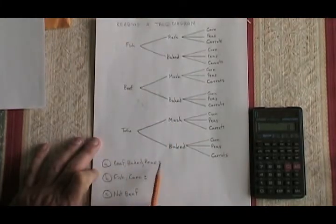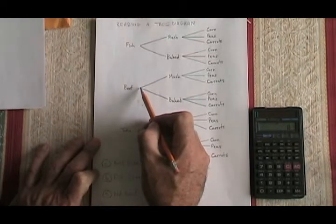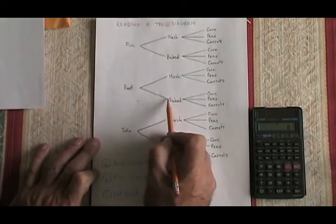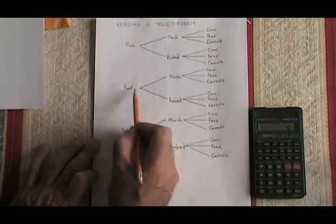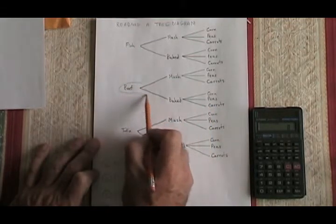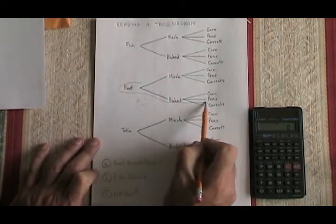The only combination that has beef with a baked potato and peas is right here. This branch going from beef to baked, and then this branch going from the baked to peas. We can circle that so we can see what has been chosen.